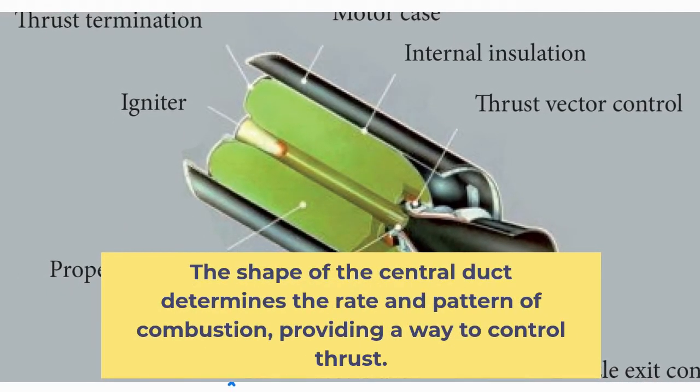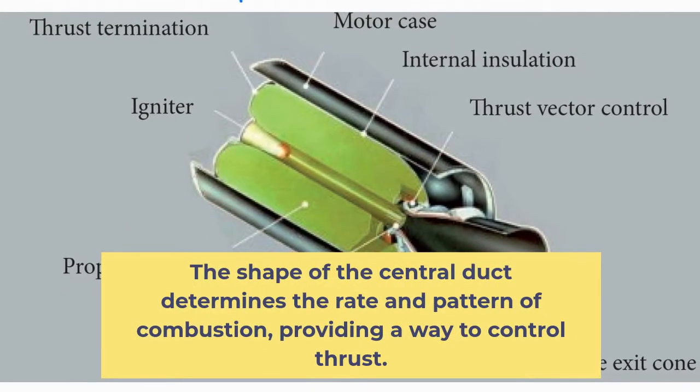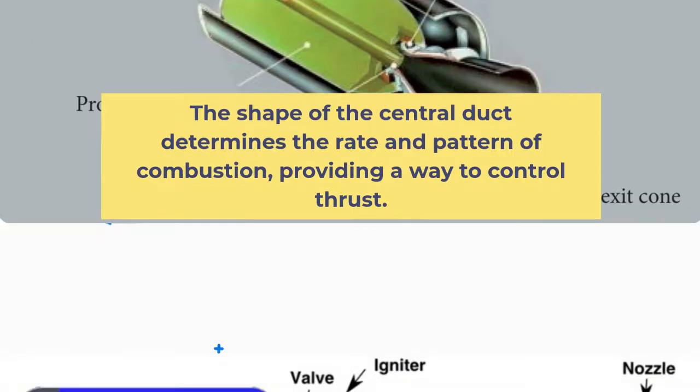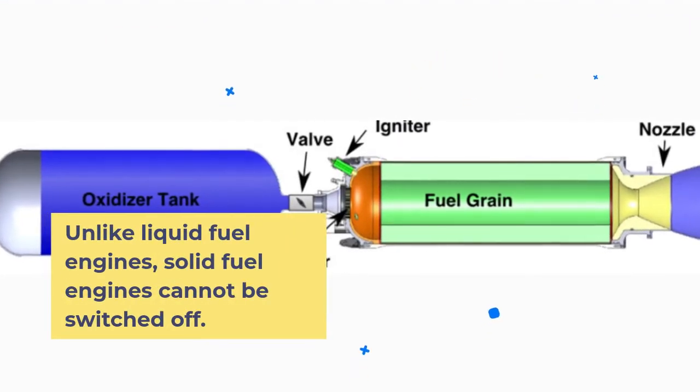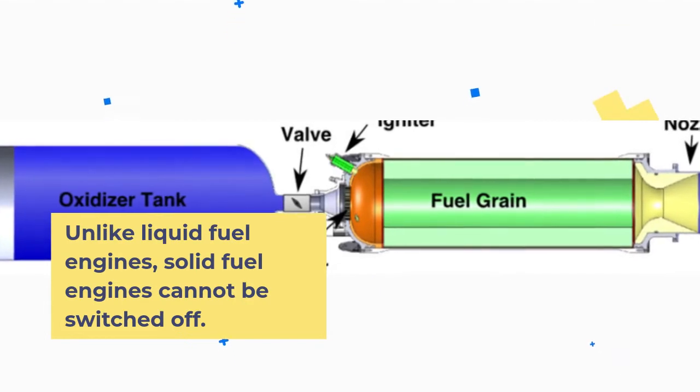The shape of the central duct determines the rate and pattern of combustion, providing a way to control thrust. Unlike liquid fuel engines, solid fuel engines cannot be switched off.